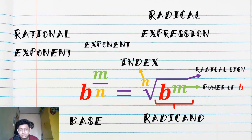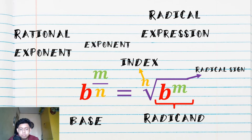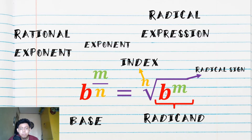We also have the exponent of the base or radicand. If you observe, the base will still be placed inside the radical symbol. The numerator is placed inside as the power or exponent of the radicand, and the denominator will become the index of the radical symbol.